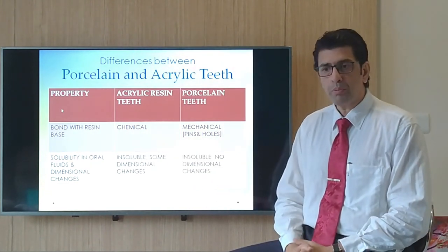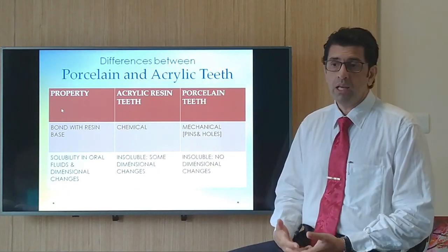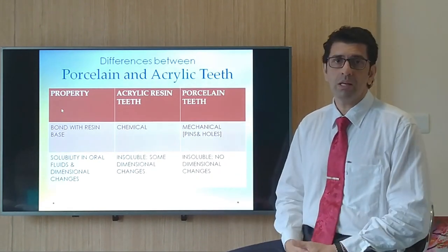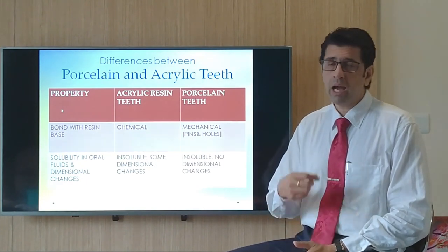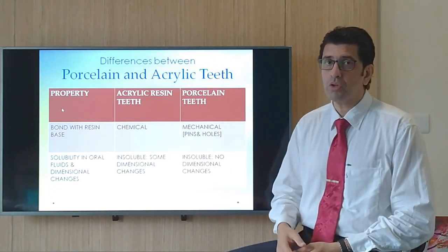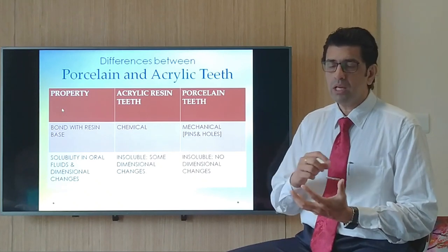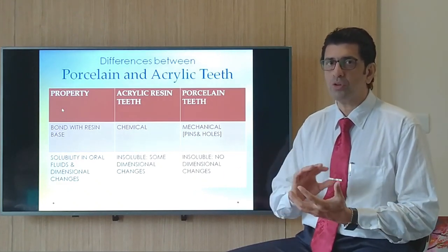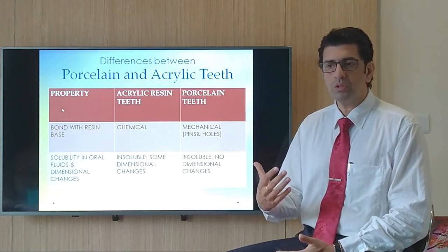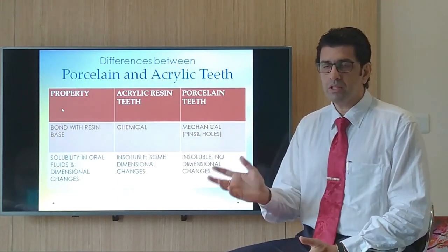Comparing acrylic and porcelain teeth on key properties: first, bond with the resin denture base — acrylic teeth bond chemically with the acrylic denture base, giving a very strong bond that doesn't come off unless a barrier prevents bonding. After de-waxing, clean the tooth surfaces thoroughly so no wax film remains. Porcelain teeth use mechanical pins and holes — a mechanical interlock — which is not as strong as the chemical bond.